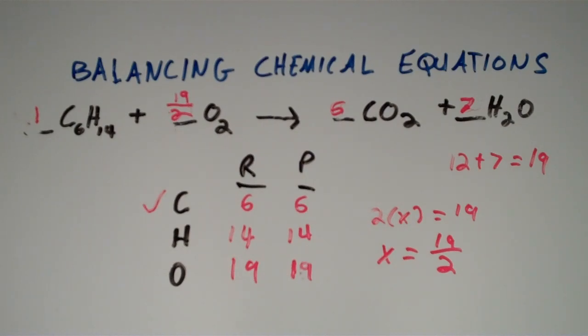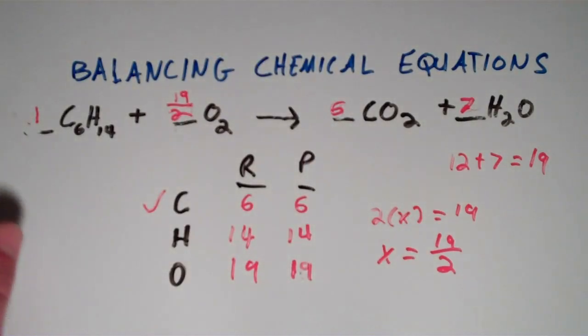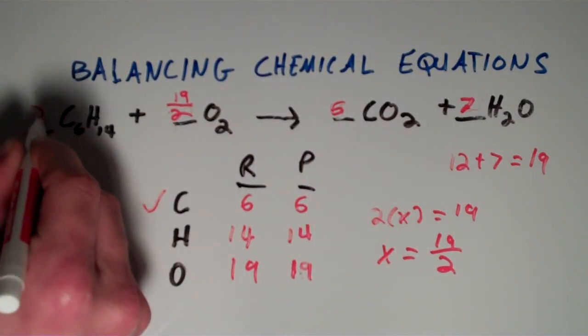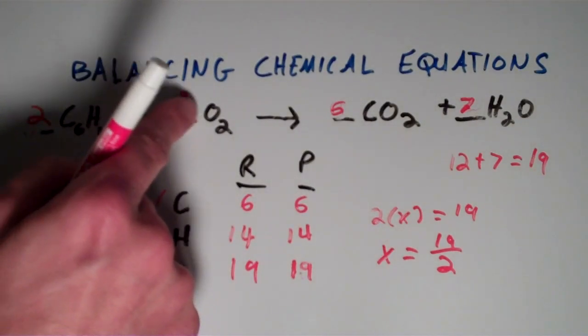So what we're going to do is we're going to multiply everything by that denominator of two to get the lowest whole number ratio. So let's go through everything, multiply everything by two. 1 times 2 is 2. 19 halves times 2 is simply just going to be 19.